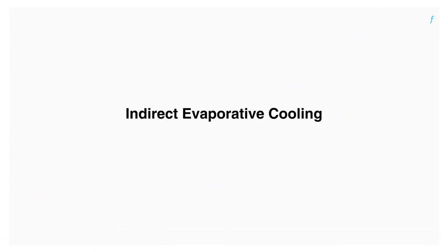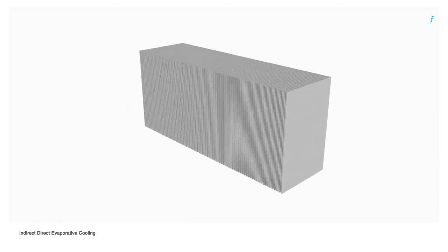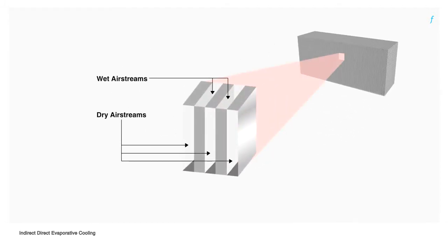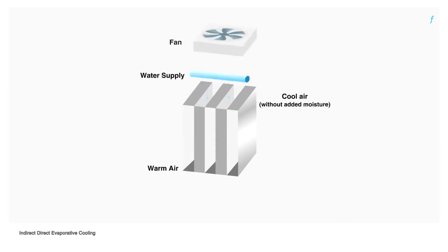The second type is indirect evaporative cooling. Here, we use a sensible heat exchanger as the medium. It consists of alternate panels, allowing wet air streams and dry air streams. Water is allowed to drip on the heat exchanger into the panels allocated for wet air streams. The fans are switched on and as warm air passes over the wet surface of the heat exchanger, water on it evaporates and the material of the heat exchanger is cooled.